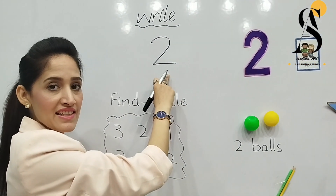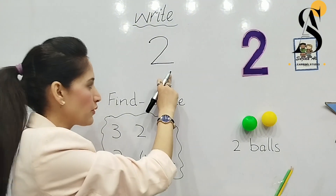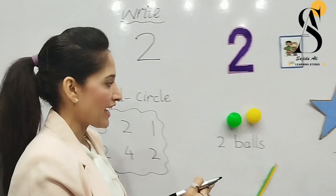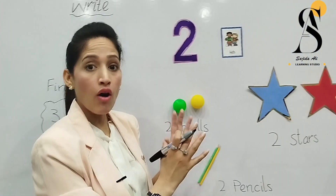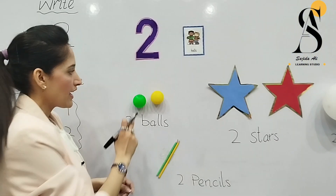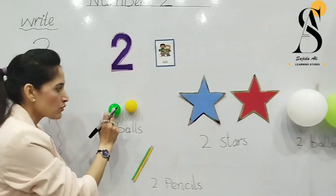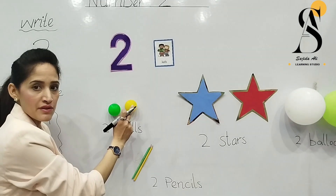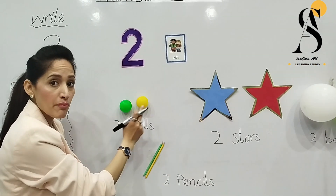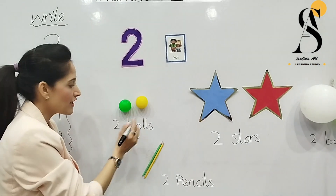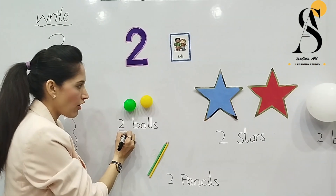Which number is this? Two. Let's count the objects. We have balls here — let's count one and two. How many balls are here? Two balls.